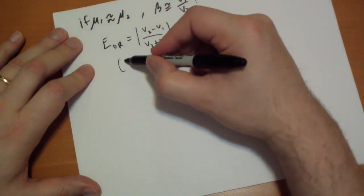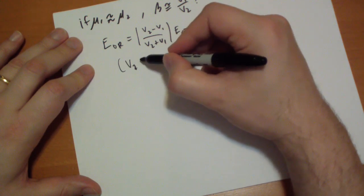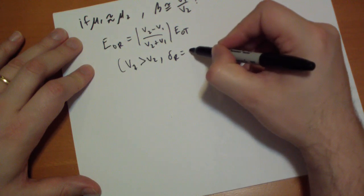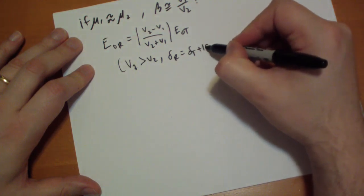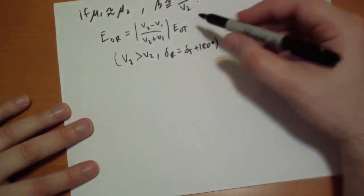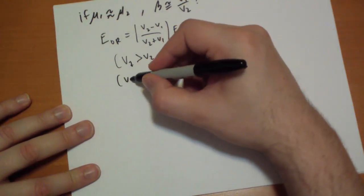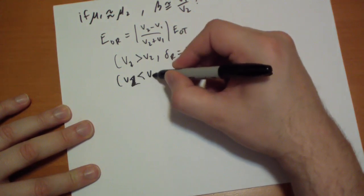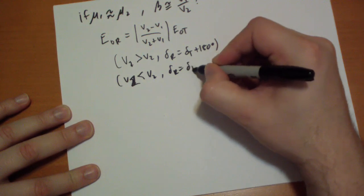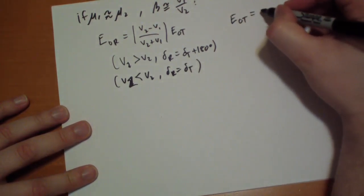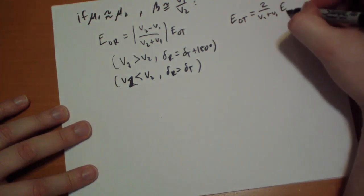With the same notes, if v1 is greater than v2, then delta r equals delta i plus 180. Otherwise, if v1 is less than v2, then delta r is equal to delta i. And then we can rewrite E naught t as equal to 2v2 over v2 plus v1 E naught i.